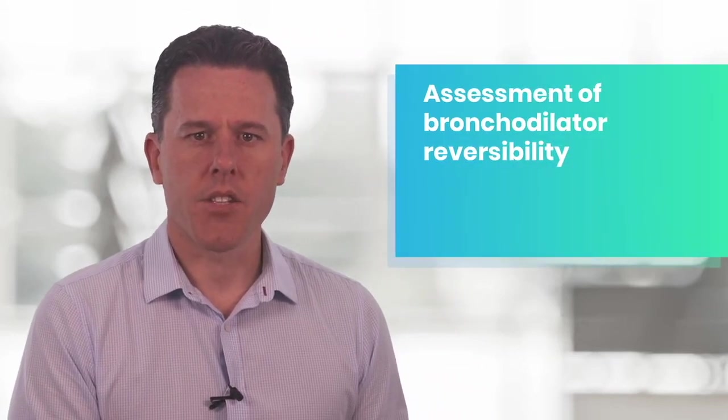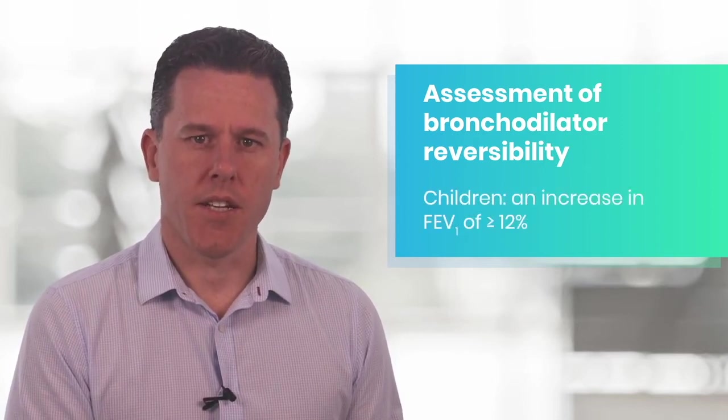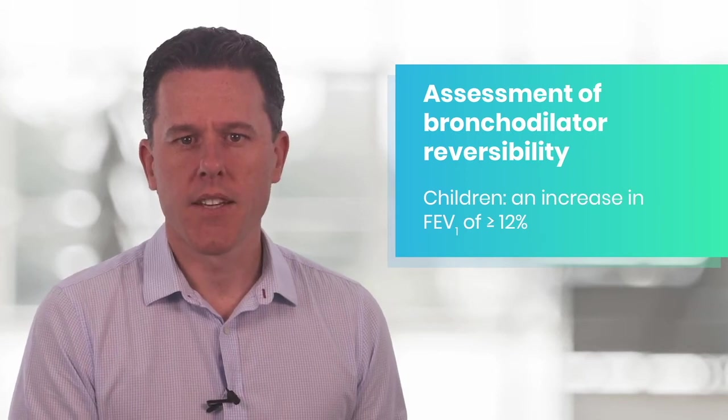The improvement has to be both 12% and 200 mL, but the improvement can be in either the FEV1 or the FVC. The reason it has to be both criteria is that if a patient has poor lung function to begin with — say their FEV1 is only one litre — a 12% improvement is only 120 mL, so that doesn't reach significance. On the other end of the scale, if someone's FEV1 is two litres and it improves by 200 mL, that's only 10% and still does not reach significance. The situation is different in children, because children's lung volumes are smaller, so their improvement only needs to be 12% and the absolute volume is not necessary.